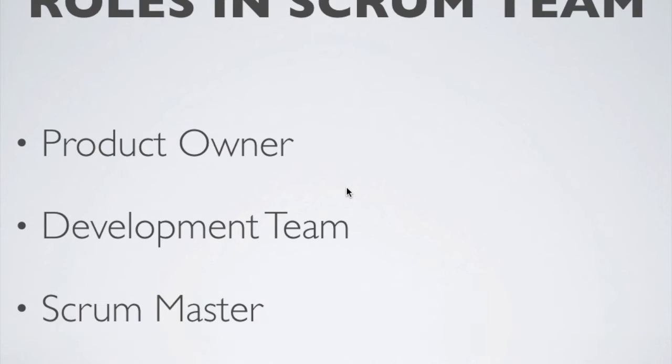The Scrum team consists of three roles: the Product Owner, the Development Team, and the Scrum Master.